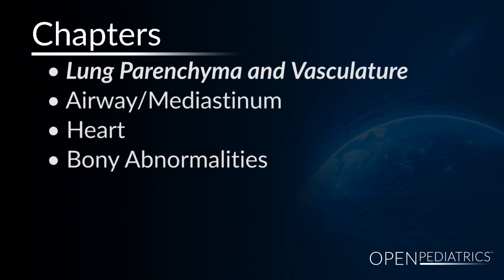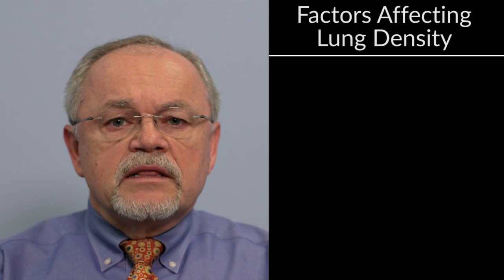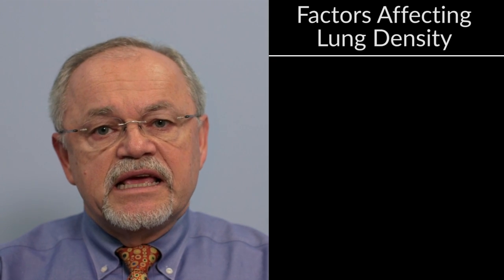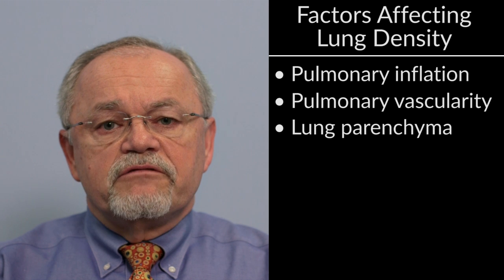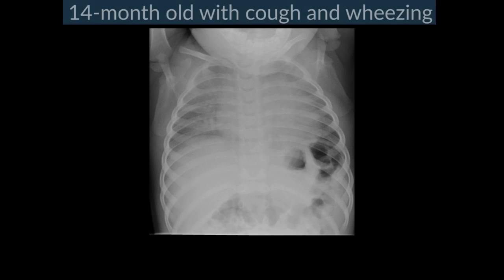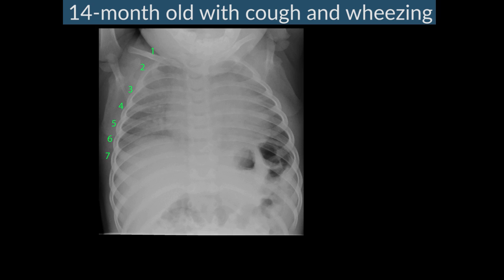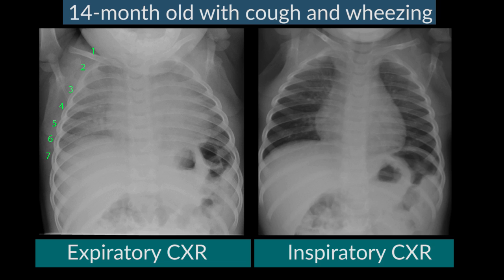Lung parenchyma and vasculature. The factors that affect lung density are primarily pulmonary inflation, the pulmonary vascularity, the lung parenchyma itself, and overlying pleural air or fluid. Here is a 14-month-old who presents with cough and wheezing. The initial frontal chest x-ray shows diffuse hazy opacification of both lungs that may mimic an overwhelming pneumonia. But there are only seven posterior ribs of inflation. A radiograph obtained two minutes later shows marked improvement, demonstrating that pulmonary hypoinflation can markedly change how the lungs look, especially in a younger baby.